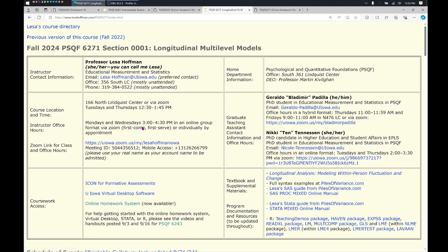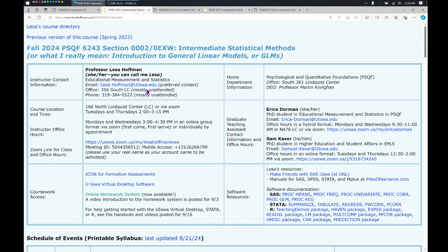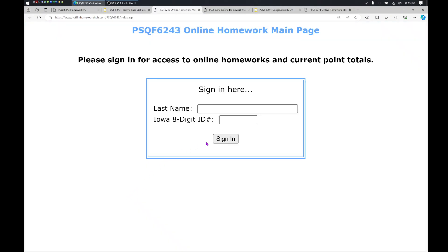Once you click on that link, you will have an entry box shown like this for the 6243 class, or in a different color scheme but the same idea for the other class.